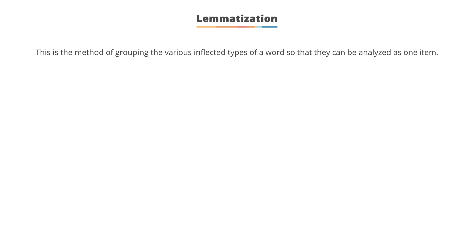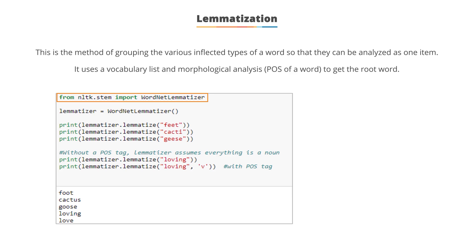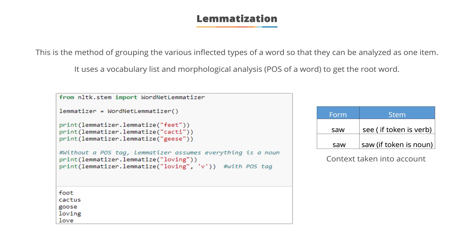Lemmatization is the method of grouping the various inflected forms of a word so they can be analyzed as one item. It uses a vocabulary list or morphological analysis to get the root word, and it uses the WordNet database which has English words linked together by their semantic relationship. Different words are extracted to their relevant morphological root word using lemmatization.